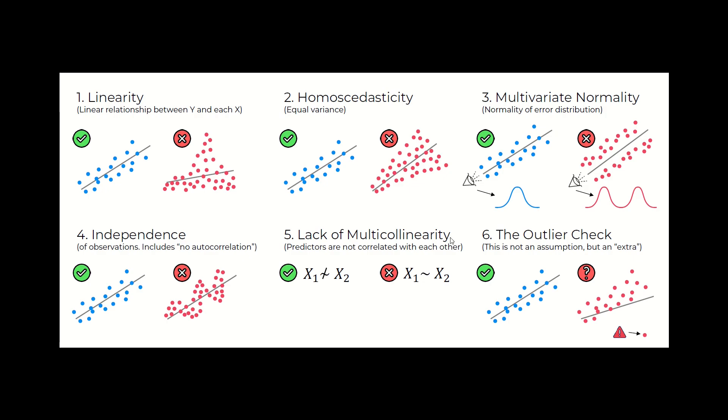There are going to be six assumptions. The very first assumption is linearity - it means linear relationship between Y and X. You can see here we are showing two cases. If you look at the chart on the right, in this case you can see linear relation is misleading. There is actually no relationship between the two variables. We would not be using this kind of model here. The left one, the blue dots, is okay. The red one is not okay. In this case we have to check for linearity - the linear relationship between our dependent variable and each independent variable.